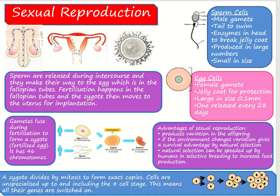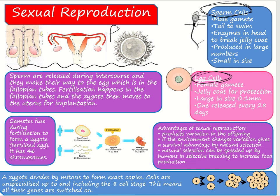In sexual reproduction, in contrast to asexual, there are two parents involved. Male parents produce sperm cells and female parents produce egg cells. This diagram shows what happens when the sperm and egg come together — that's called fertilization. At fertilization, the nuclei of the sperm and egg fuse, which means they join together.